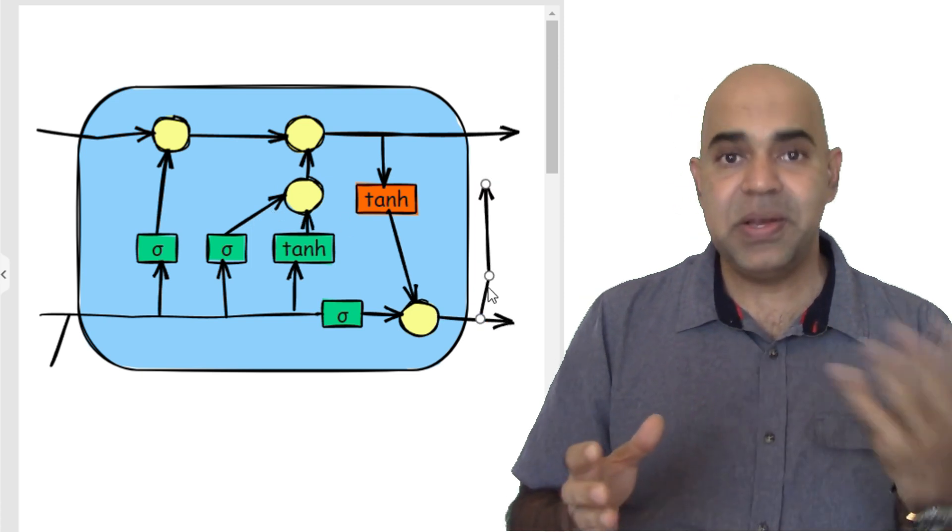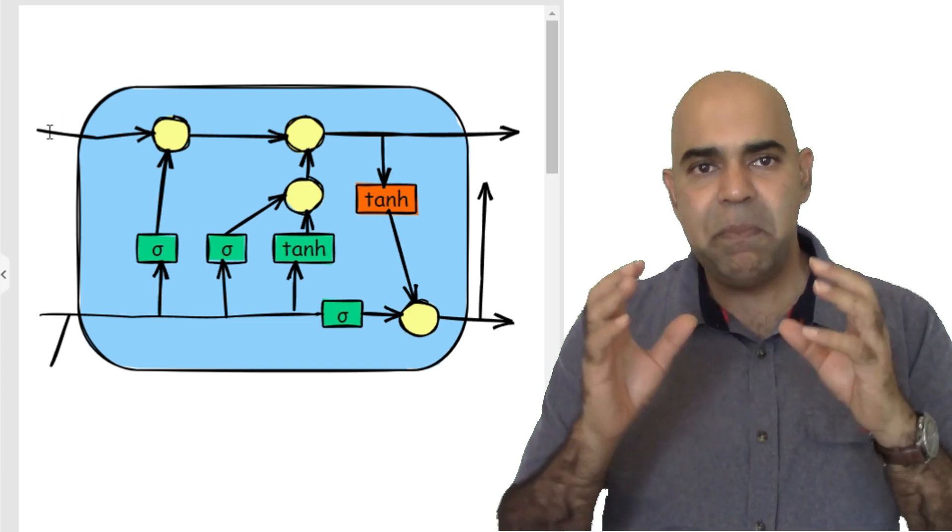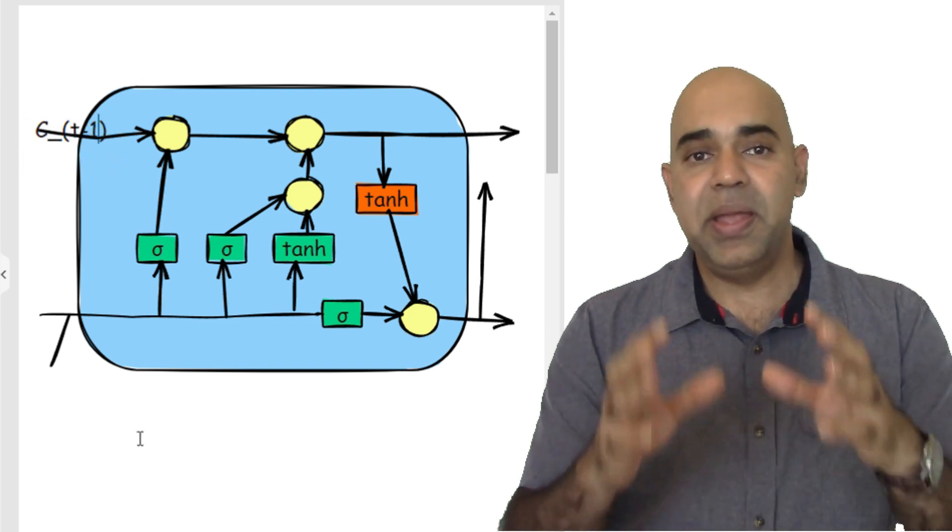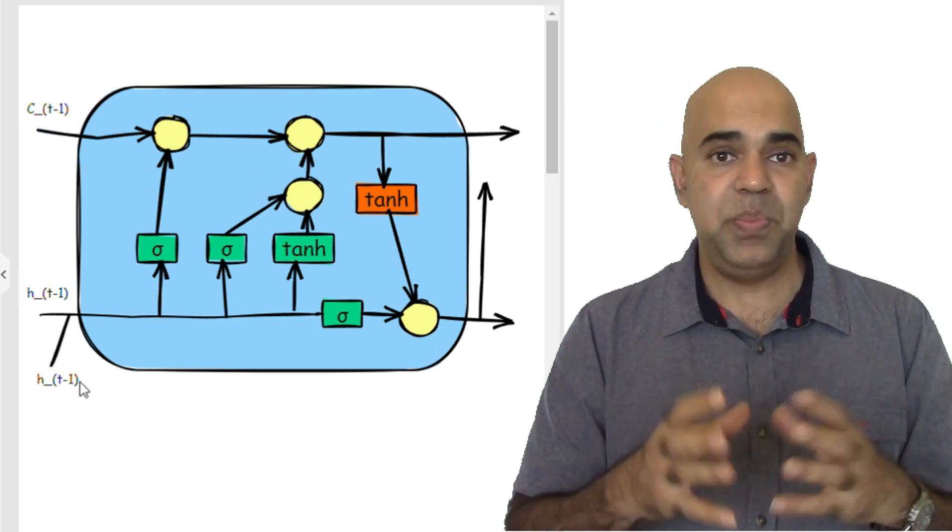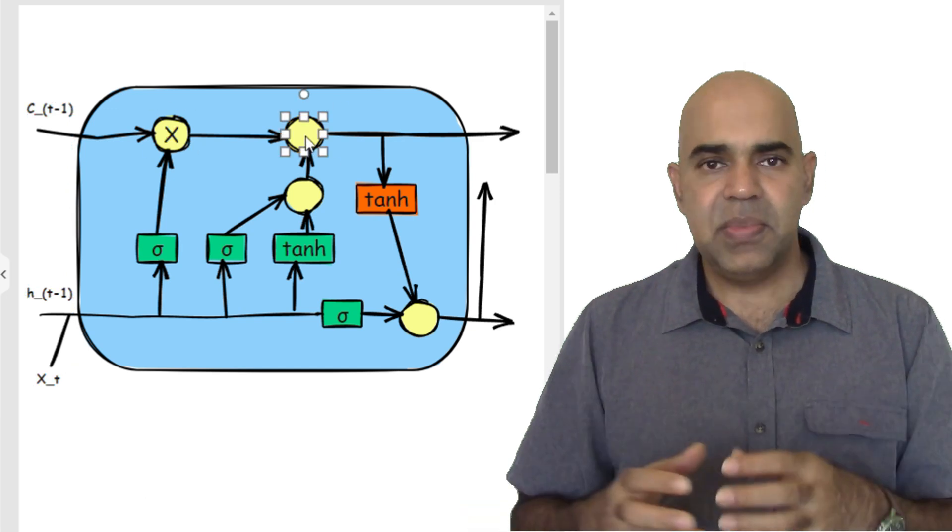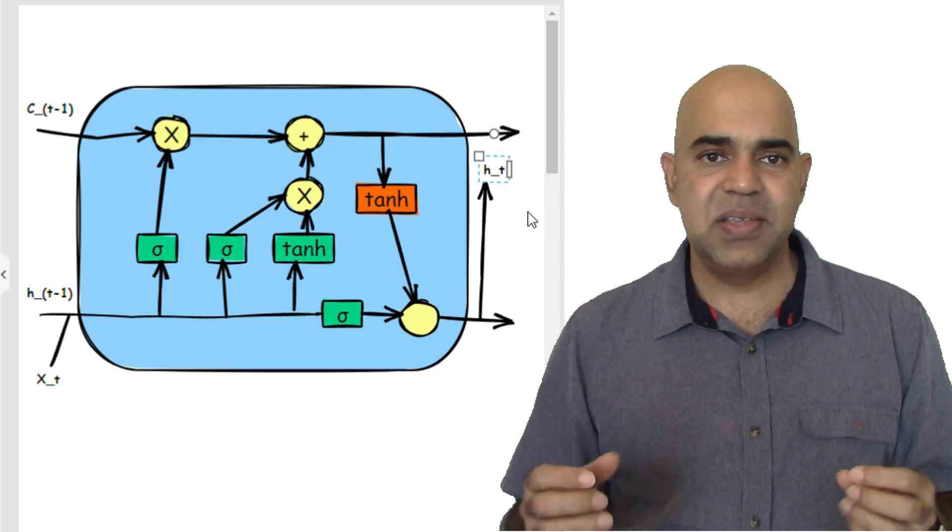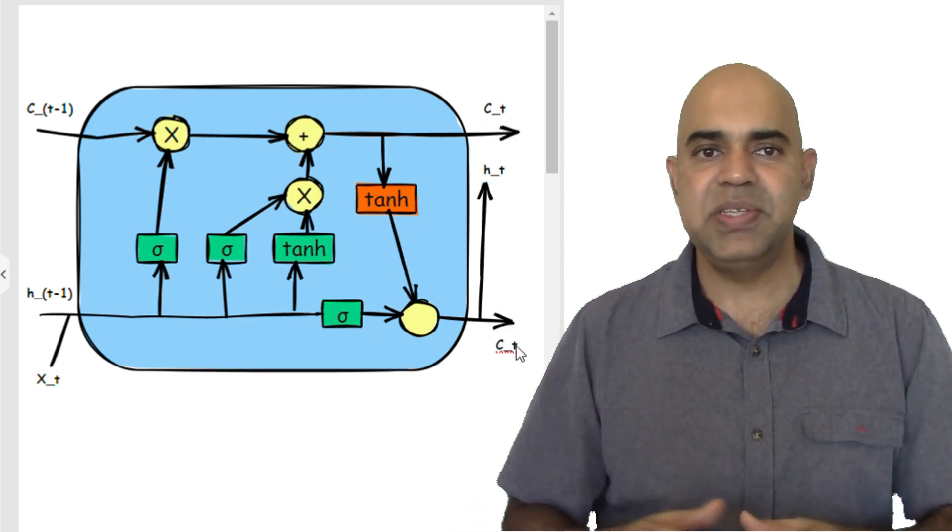This architecture allows LSTMs to maintain a balance between remembering important past information and updating with new data, making them much more effective at handling long sequences. By carefully managing the flow of information, LSTMs can preserve gradients over many time steps. LSTMs became a robust choice for a variety of tasks involving sequential data, from language modeling to time series analysis.